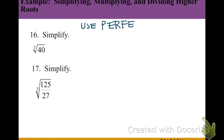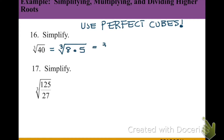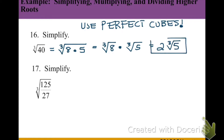So when keeping these in mind and trying to simplify, we have to use those perfect cubes to help us out. In this case, the perfect cube we can use for 40 is 8 × 5. If we break that apart into two different cube roots, we have cube root of 8 times cube root of 5. Reducing the cube root of 8 gives us 2, so our final answer is 2 times the cube root of 5.